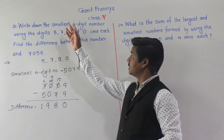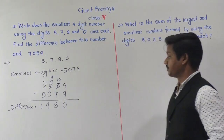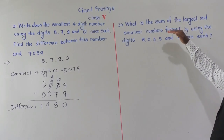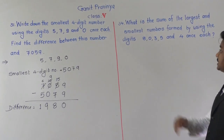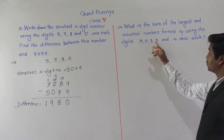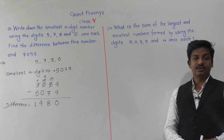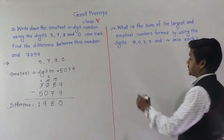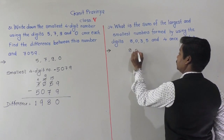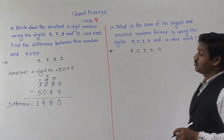So 1980 is the difference between 7059 and the smallest number formed by those four digits. Now question number 34: what is the sum of the largest and smallest numbers formed using the digits 8, 0, 3, 5 and 4 once each?